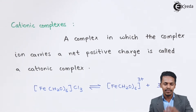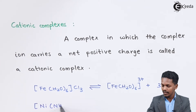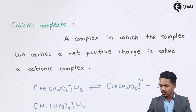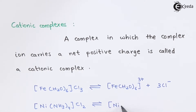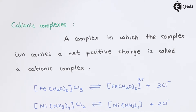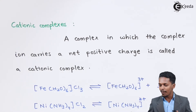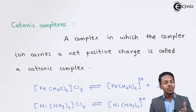Another example: consider [Ni(NH₃)₄]Cl₂. When ionized, it gives [Ni(NH₃)₄]²⁺ and two Cl⁻ ions. Since two Cl⁻ ions are in the primary sphere giving a two-minus charge, the complex ion acquires a two-plus charge. The complex ion thus carries a net positive charge, so this is also a cationic complex.